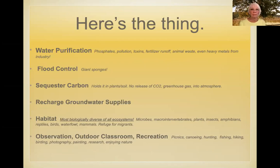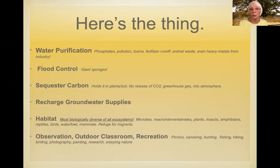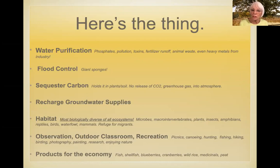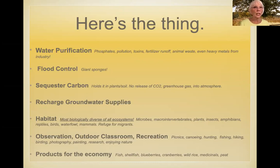And then there's recreation. Some wetlands allow hunting, fishing, canoeing. At some wetlands we can bring photo equipment and take gorgeous photos, or paint a beautiful picture. We can do research in a wetland, or you can go there just to be. And then there's a side benefit: the fish and shellfish that come from wetlands, the blueberries, cranberries, wild rice. Some medicinal herbs even grow in wetlands. And then there's the peat — the gardeners know all about that. Personally, I'm going to get on my soapbox and say I don't use peat anymore; I've switched to coir.